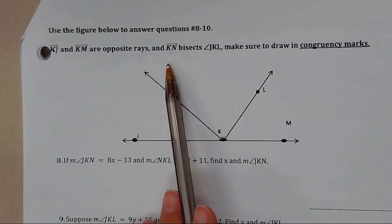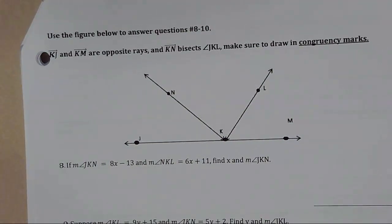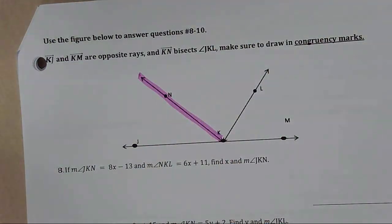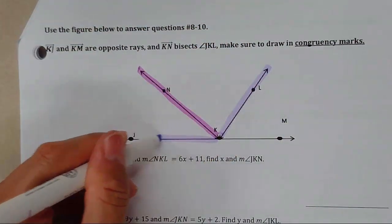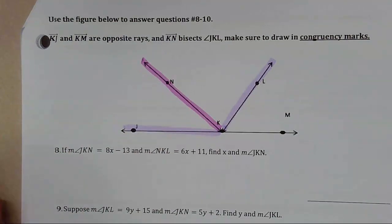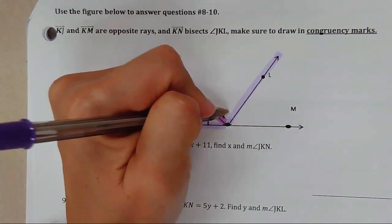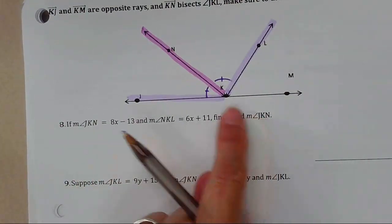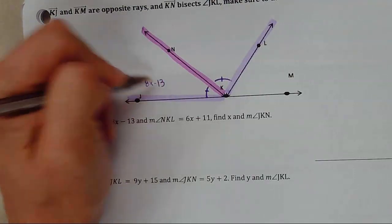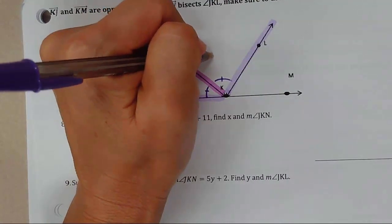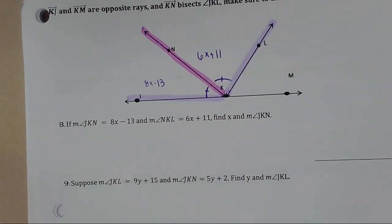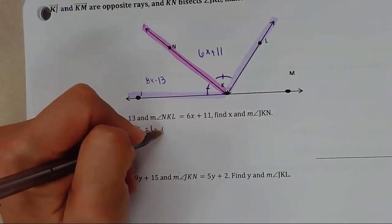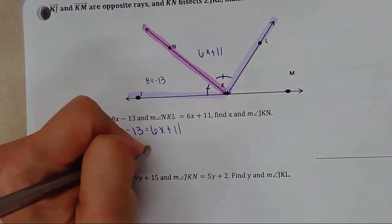KJ and KM are opposite rays, and KM bisects the whole angle — this is true for questions 8, 9, and 10. It may not look congruent, but it is based on what we're told. Angle JKN equals 8x − 13 and angle NKL equals 6x + 11. Since KM bisects the angle, these are congruent, so set them equal: 8x − 13 = 6x + 11.